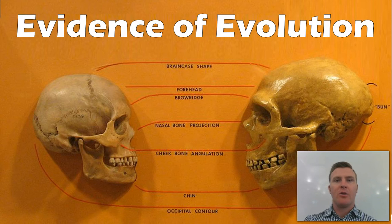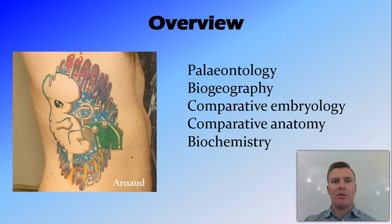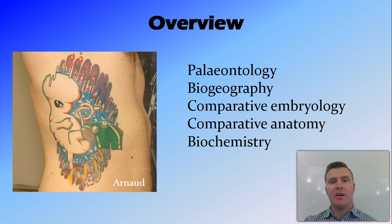In this video, we're going to look at some of the different forms of evidence for evolution. We're going to talk about paleontology, biogeography, comparative embryology, comparative anatomy, and biochemistry.